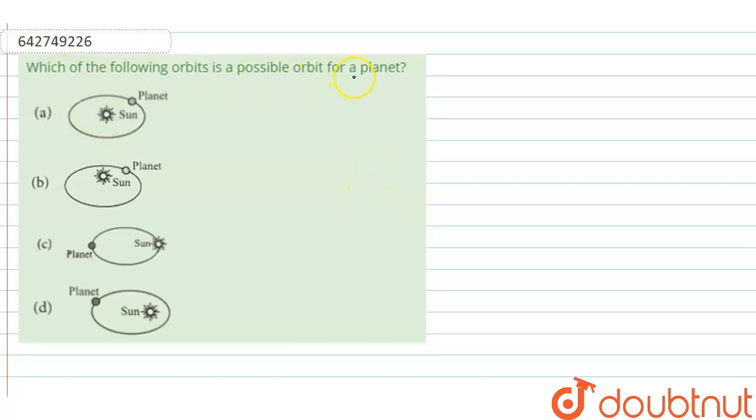So there are four pictures here and we have to find out which picture is the correct option for this question. According to Kepler's law, we know that the orbit where the planet rotates is elliptical.